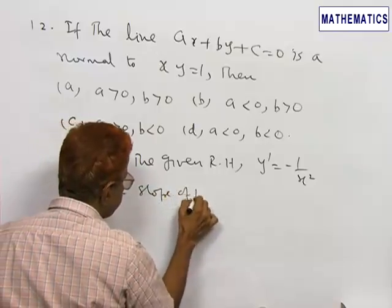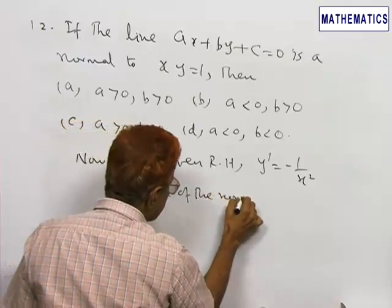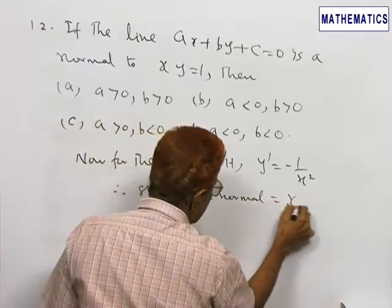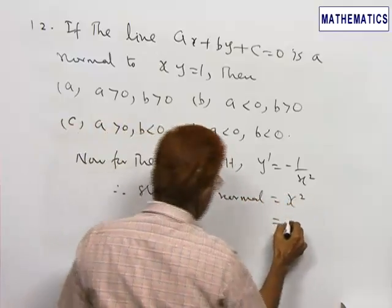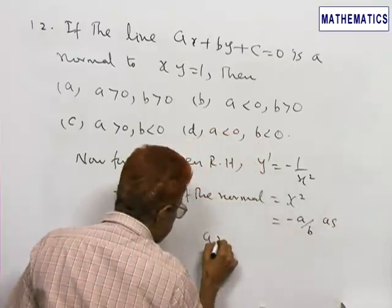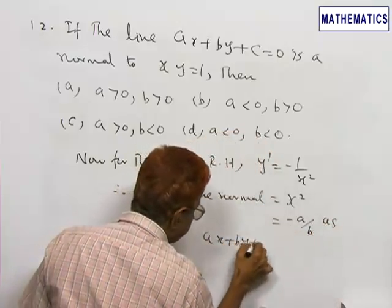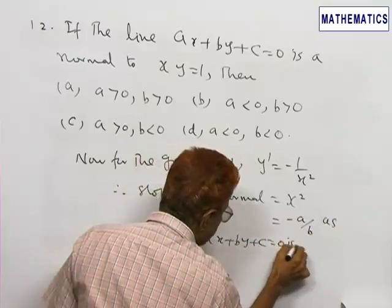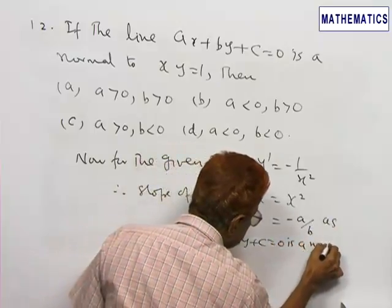slope of the normal is equal to x², which is equal to -a/b, as ax + by + c = 0 is a normal.